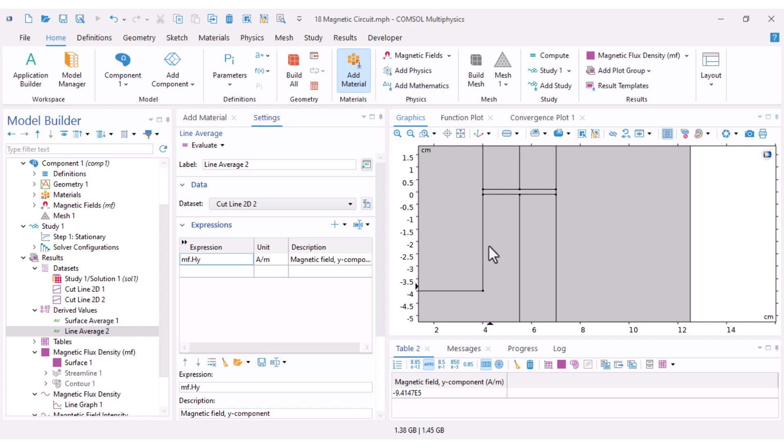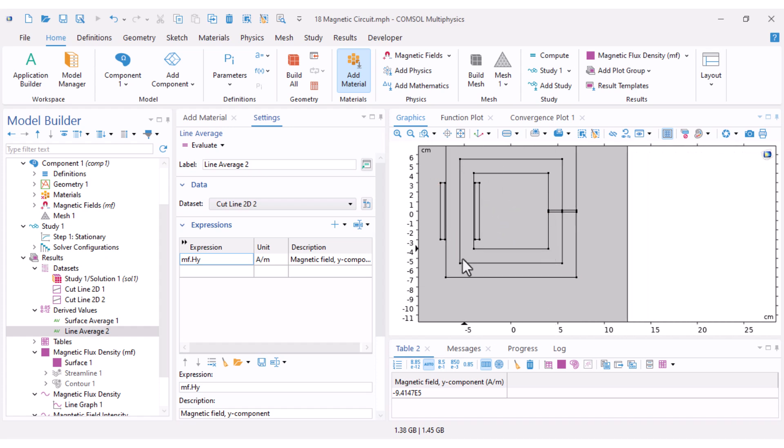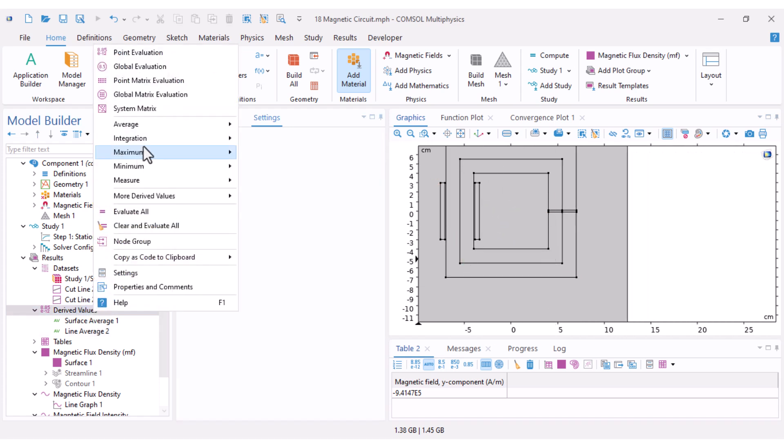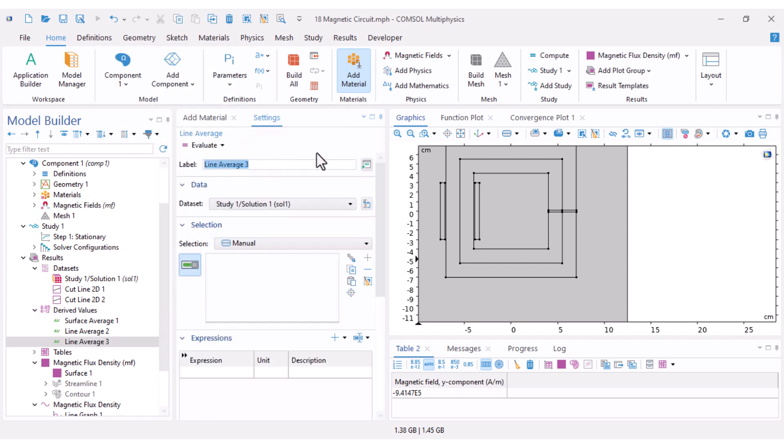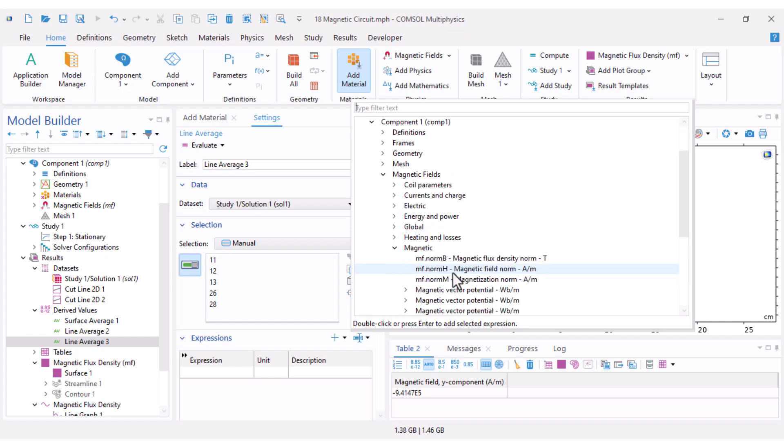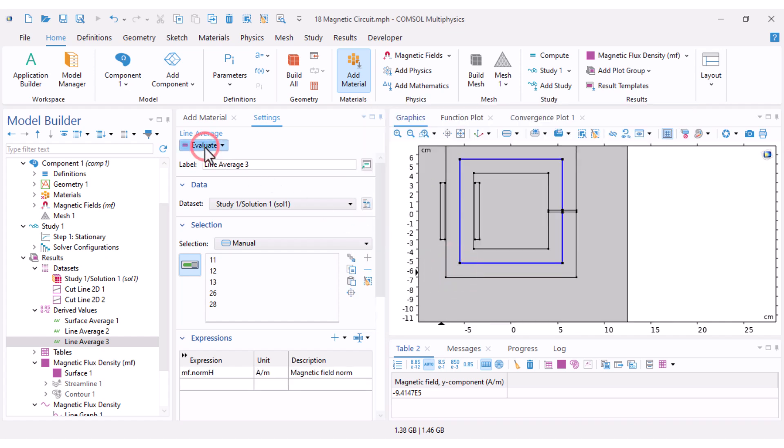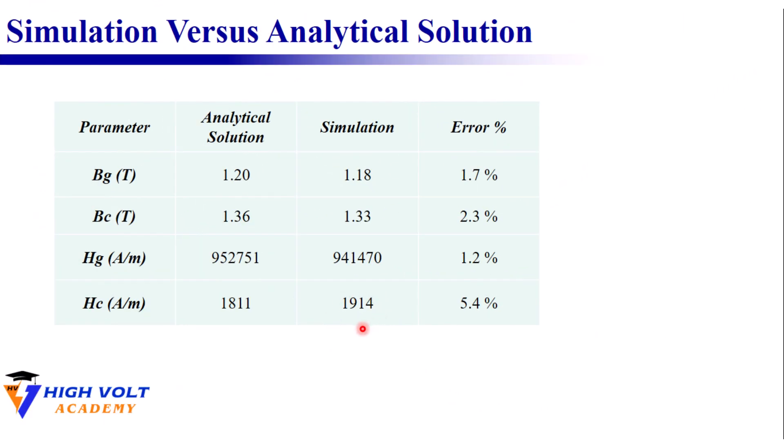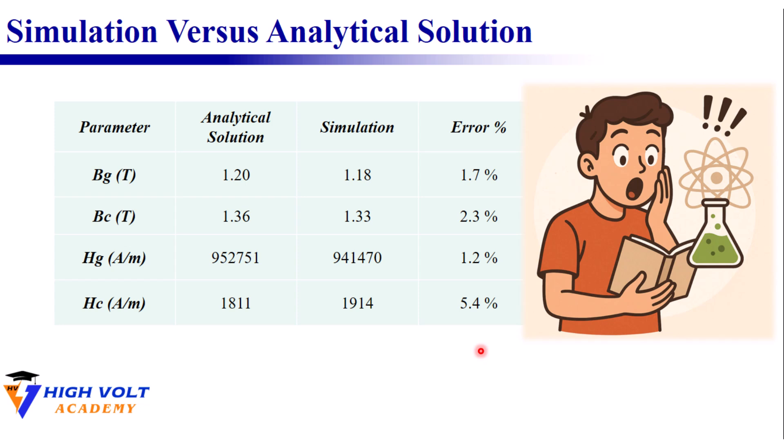Finally let's see how accurate our assumption of a constant Hc was. I've already created my magnetic path, therefore I can add another Line Average. Select my magnetic path and for the expression under Magnetic I can select magnetic field norm and click Evaluate. The result is 1914. When compared to our analytical assumption the error is about 5 percent.